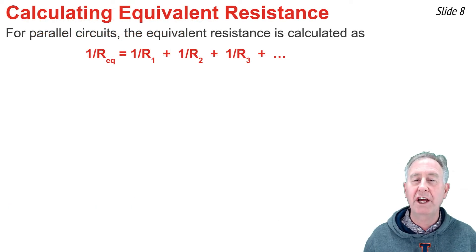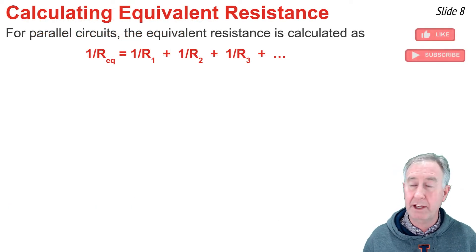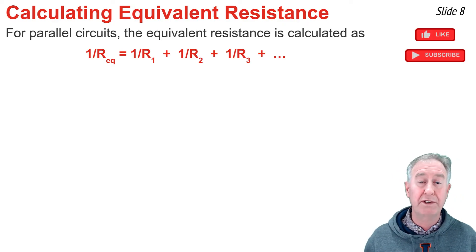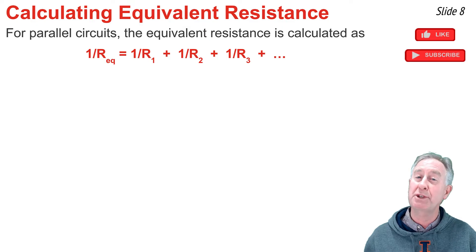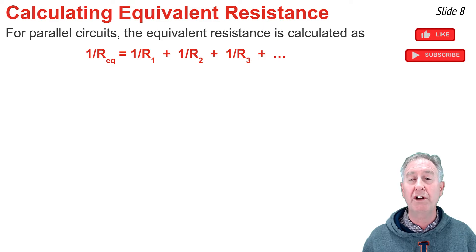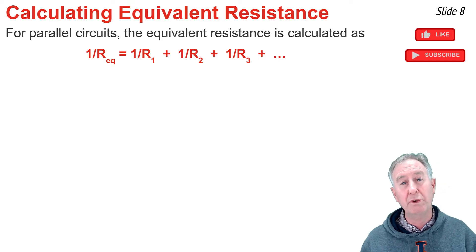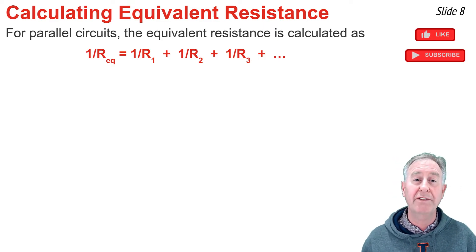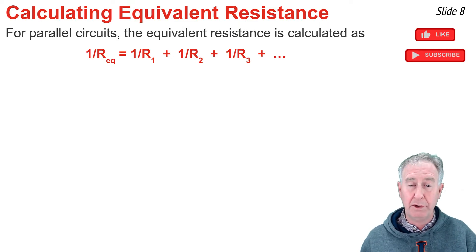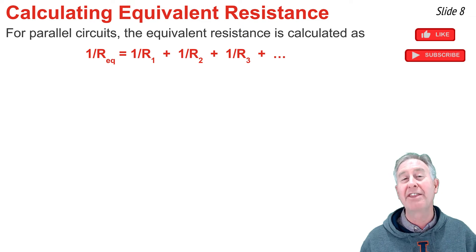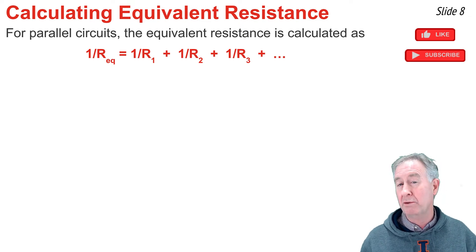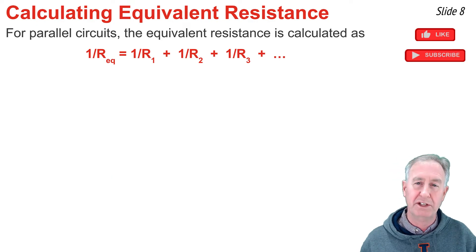For parallel circuits, calculating equivalent resistance requires this formula: 1/R_eq = 1/R₁ + 1/R₂ + 1/R₃. Substitute all resistance values into the right side and evaluate. The result is not R_eq — it's 1 divided by R_eq. So take the reciprocal of that result to get the equivalent resistance.